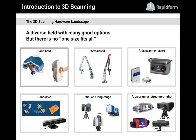Let's talk first about handheld scanners. These are devices that, as it says, are handheld — you wave them around the object that you want to scan. They have different technologies to position themselves relative to the object, but ultimately they all work similarly: you pick the device up, it's connected to a laptop, you start scanning, and you can watch the scan showing up live in front of you.